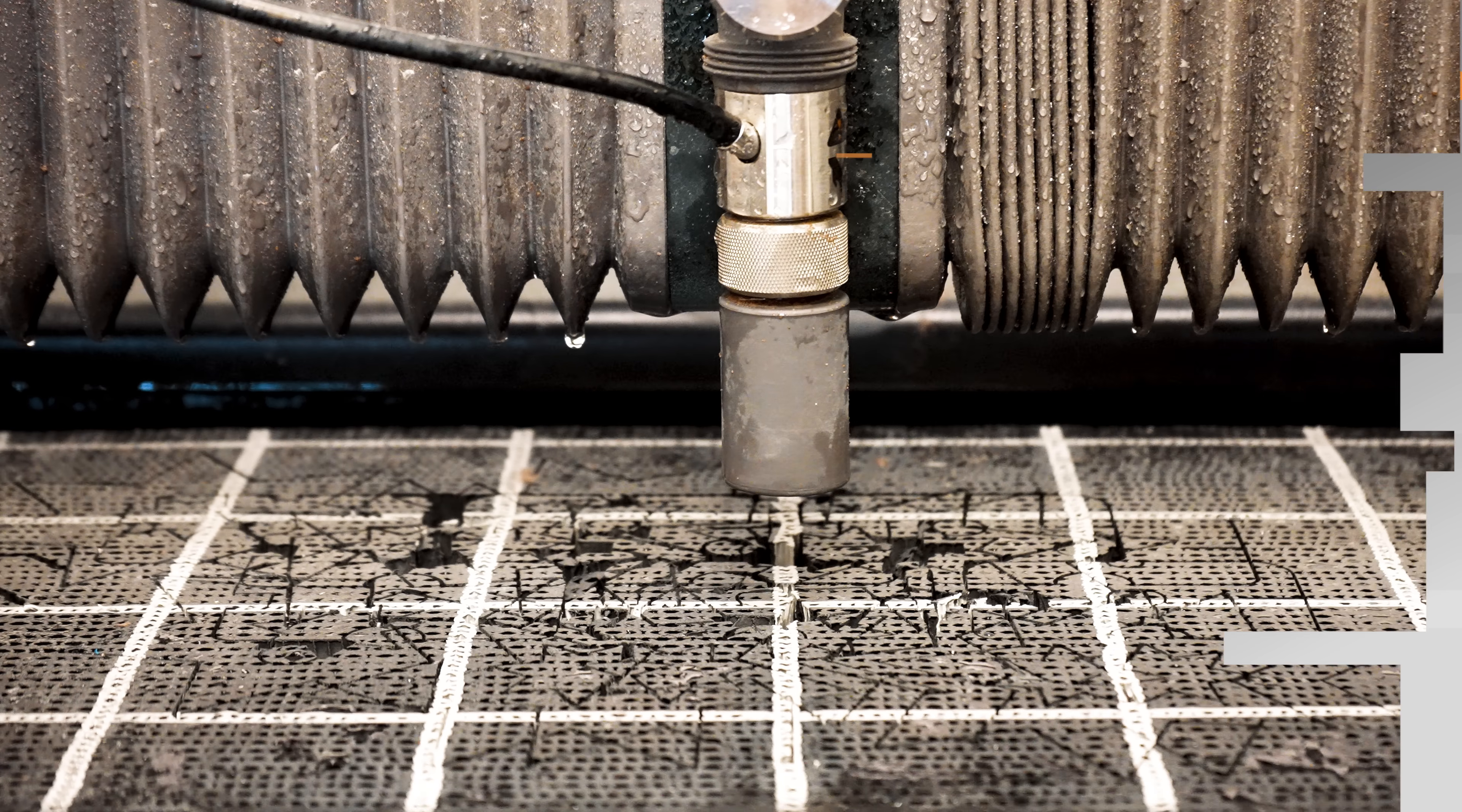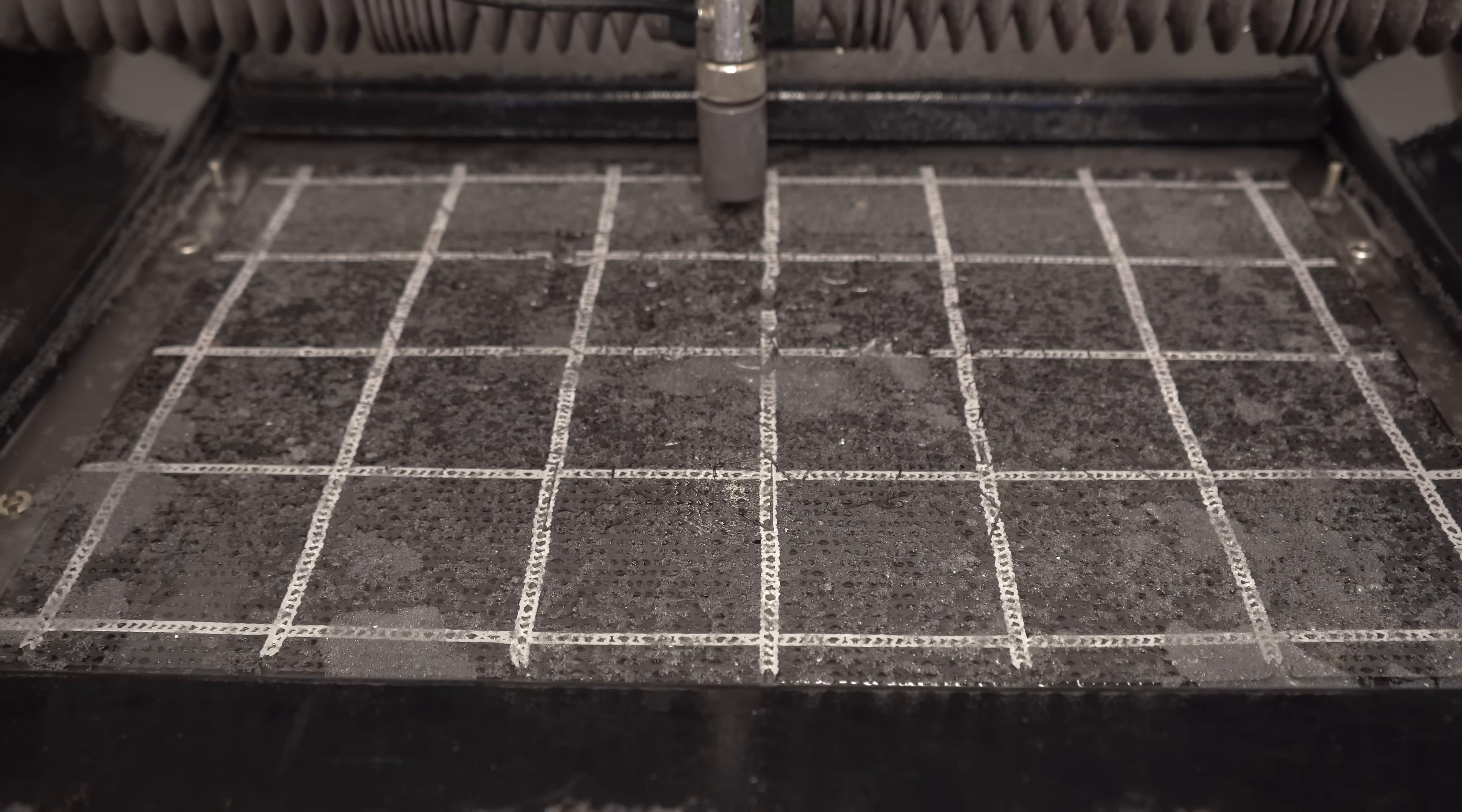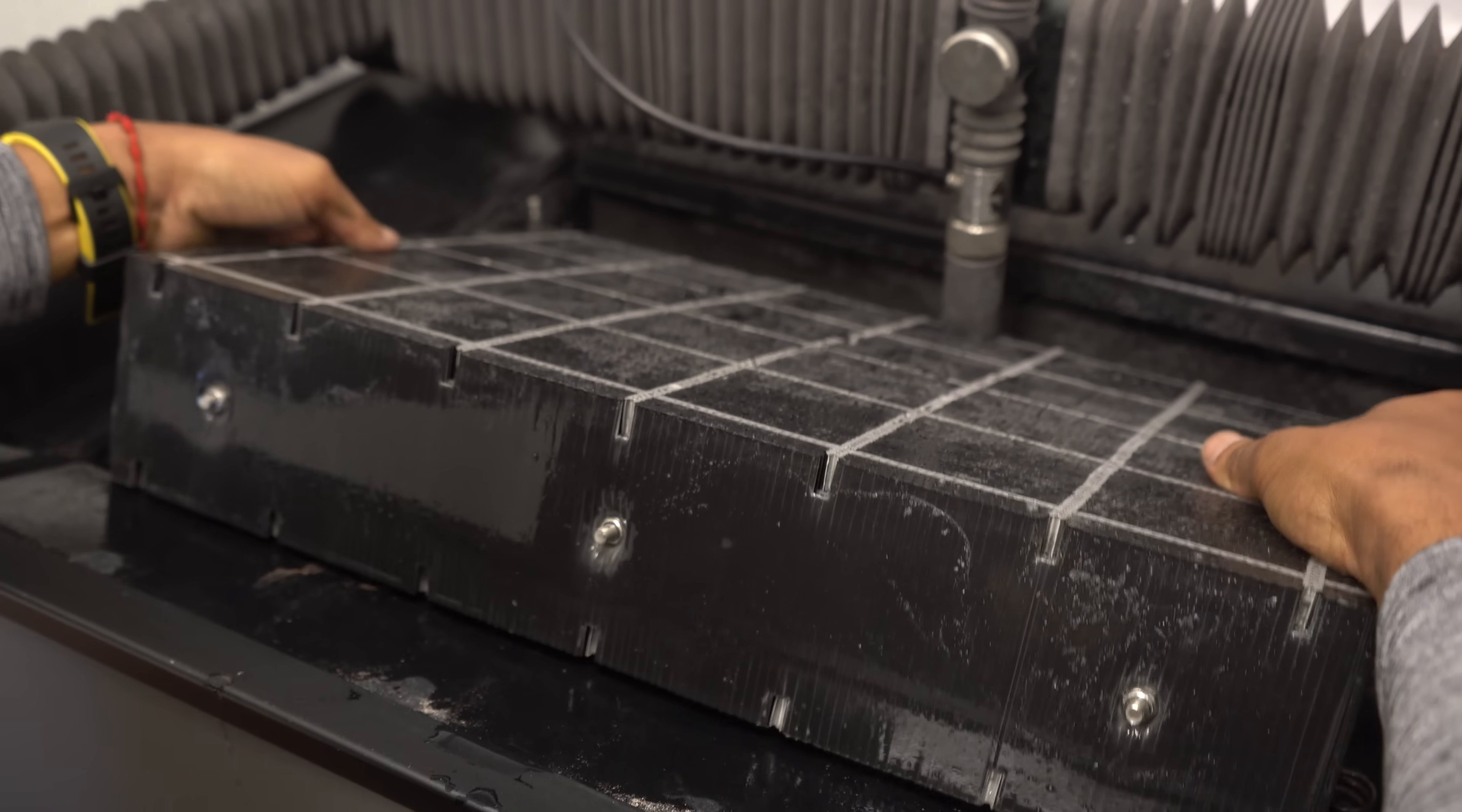Hassle-free. Replacing the cutbed on Wazer Pro is easy. The drain button on the side of the machine drains the tank to below the level of the cutbed. The cutbed mounting points are now located on the top of the tank instead of the bottom,